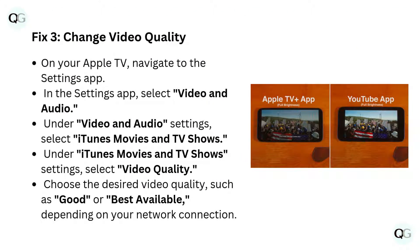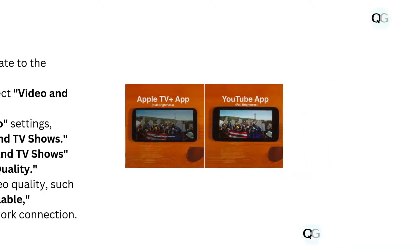Fix 3: Change video quality. On your Apple TV, navigate to the settings app and select video and audio. Under video and audio settings, select iTunes movies and TV shows, then select video quality. Choose the desired video quality such as good or best available, depending on your network connection.